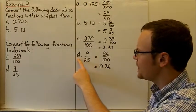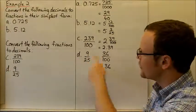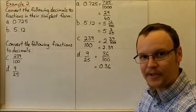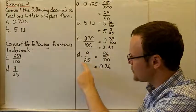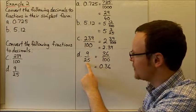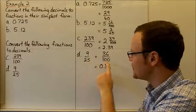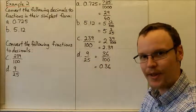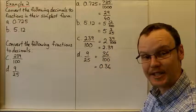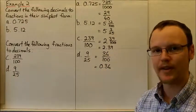Finally, for 9 over 25, it was easy when the denominator was a power of 10, but here we don't have that. So we need to find an equivalent fraction, multiplying the top and bottom by 4 to yield 100 as the denominator, giving us 36 hundredths — so that's just 0.36.